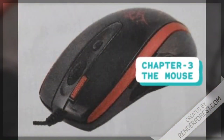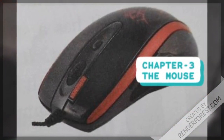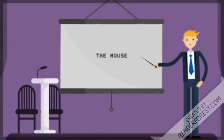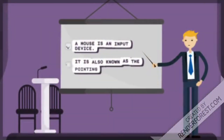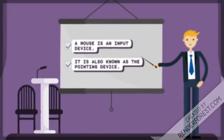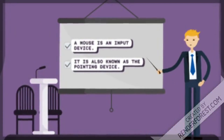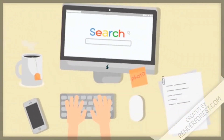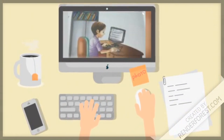Chapter 3: The Mouse. A mouse is an input device. It is also known as the pointing device. The mouse is normally kept on the right hand side of the keyboard.